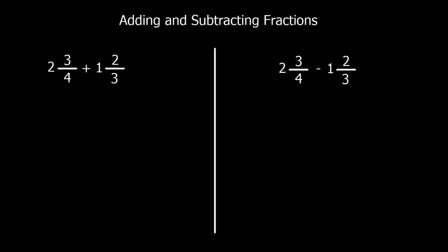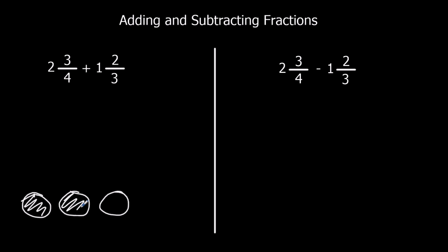Here we've got mixed numbers. So 2 and 3 quarters means I've got 2 whole pizzas and 3 quarters of another pizza. What I want to do first is work out how many quarters I've got — I want one top-heavy fraction. So if these were quarters, how many quarters have I got? I've got 4, 4, and 3, so I've got 11.